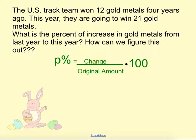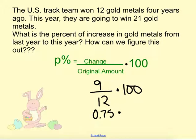Looking back at our question, we would say the change, well, we went from 12 to 21, so the change would be 9. We increased by 9 gold medals. The original amount is 12, and then we'll multiply by 100. When we put this in decimal 0.75 times 100, that would mean that we have 75% increase. So we can use this formula in order to do it.